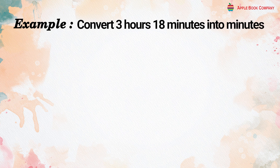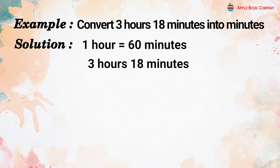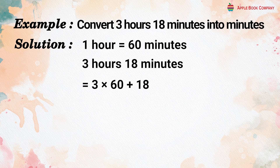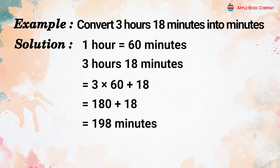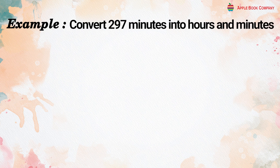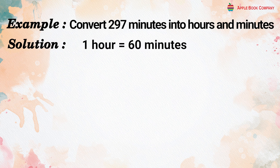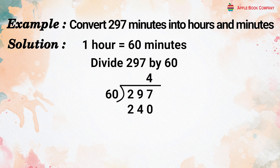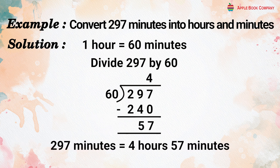Conversion of time units. Convert 3 hours 18 minutes into minutes: 1 hour = 60 minutes, so 3 hours 18 minutes = 3×60 + 18 = 180 + 18 = 198 minutes. Example: Convert 297 minutes into hours and minutes. Divide 297 by 60 — 4 sixties are 240, leaving 57. Therefore, 297 minutes = 4 hours 57 minutes.